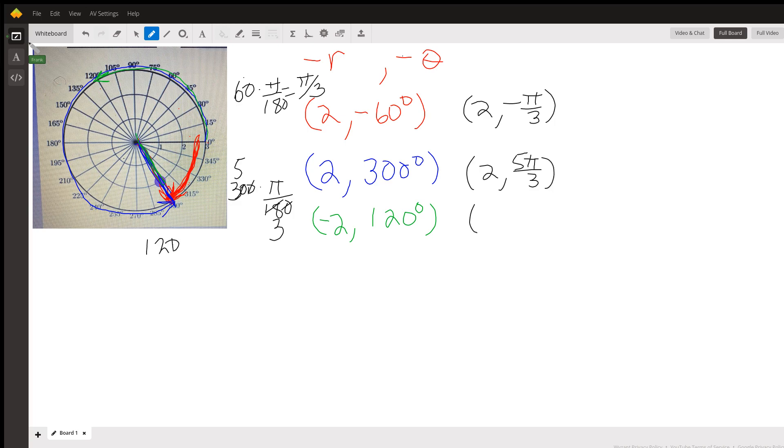And then 120 degrees times pi over 180. 4 goes into 12, 3 times, 4 doesn't go into 18, 6 goes into 12 twice, 6 goes into 18 3 times. So 2 pi over 3. This is negative 2, 2 pi over 3.